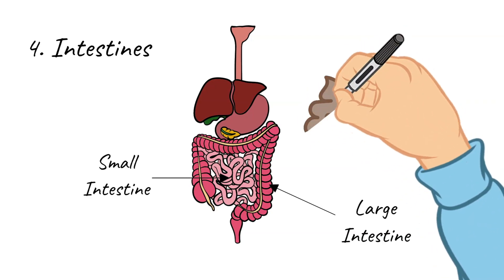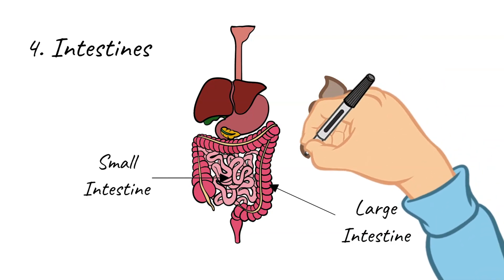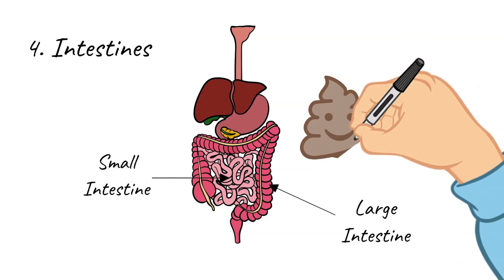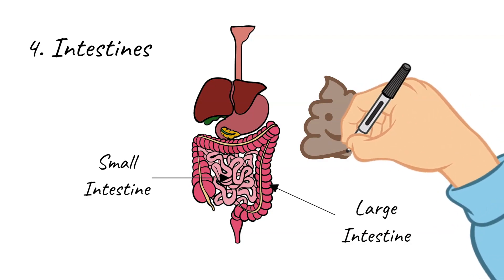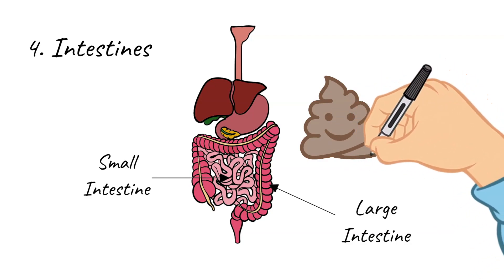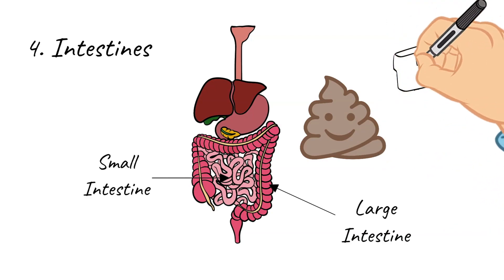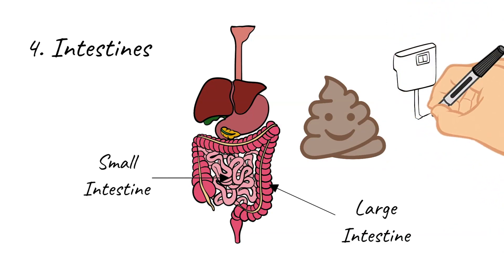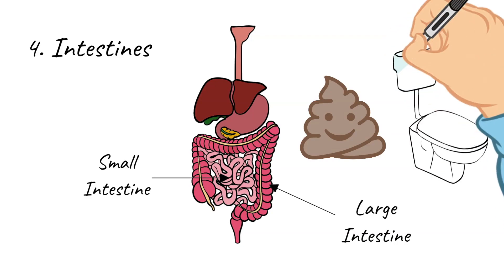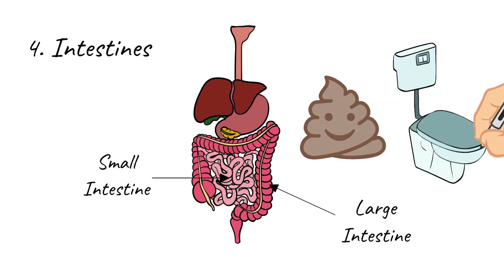Bile is then secreted into the gastrointestinal tract and contains the waste product bilirubin, also from the liver. Bilirubin is a brown pigment which gives human feces that characteristic brown color. The last step in this process is to excrete the waste from the large intestine out of your body.